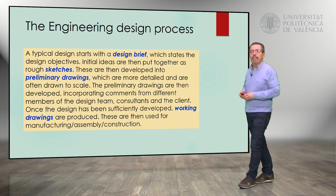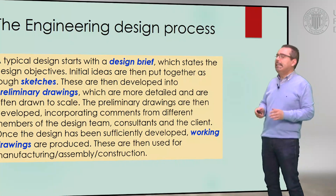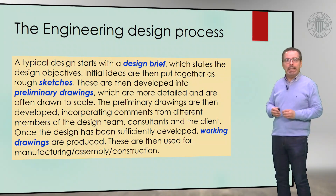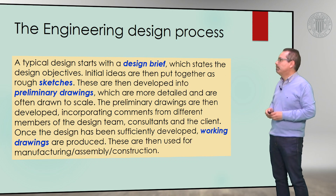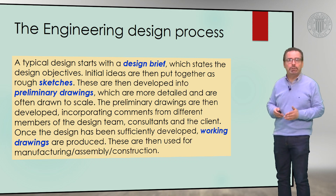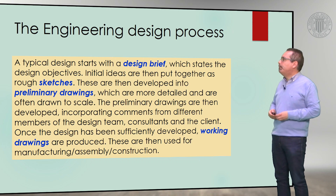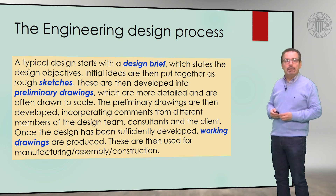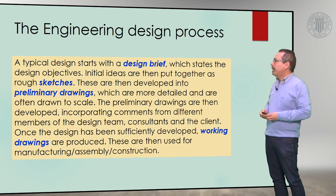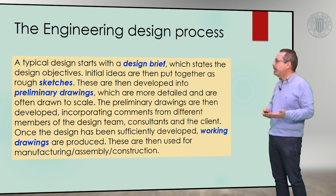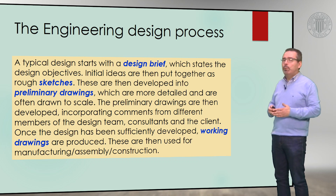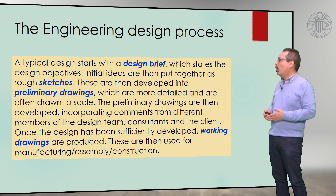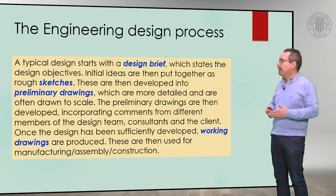Here we have a brief explanation of the engineering design process, which is useful to locate the different types of technical drawings in context. A typical design starts with a design brief, which states the design objectives. Initial ideas are then put together as rough sketches. These are then developed into preliminary drawings, which are more detailed and are often drawn to scale. The preliminary drawings are then developed incorporating comments from members of the design team, consultants, and the client. Once the design has been sufficiently developed, working drawings are produced or released, and are often used for manufacturing, assembly, or construction purposes.